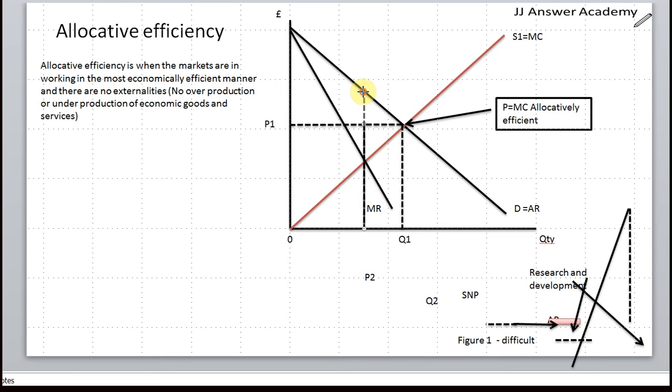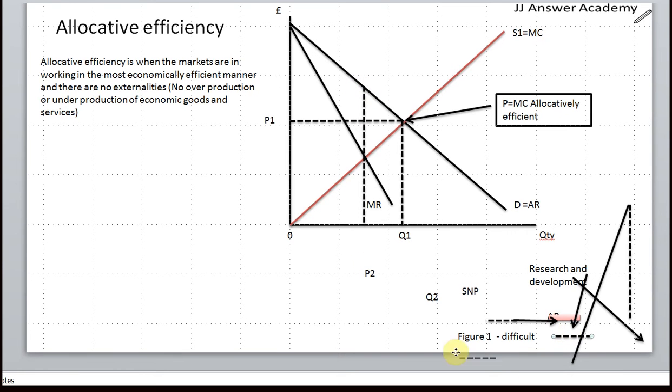Monopoly would produce where MR equals MC at output Q2, increase the price to P2 to make super normal profits.